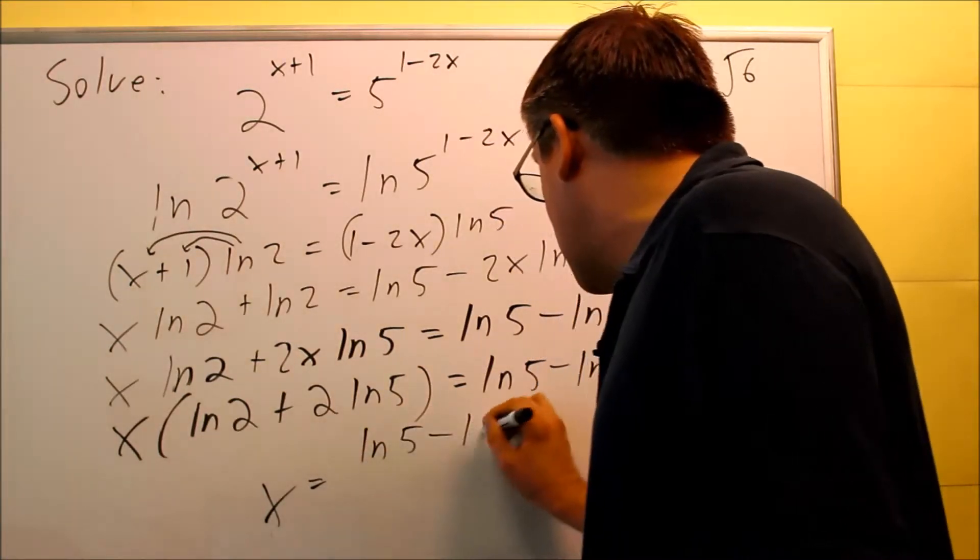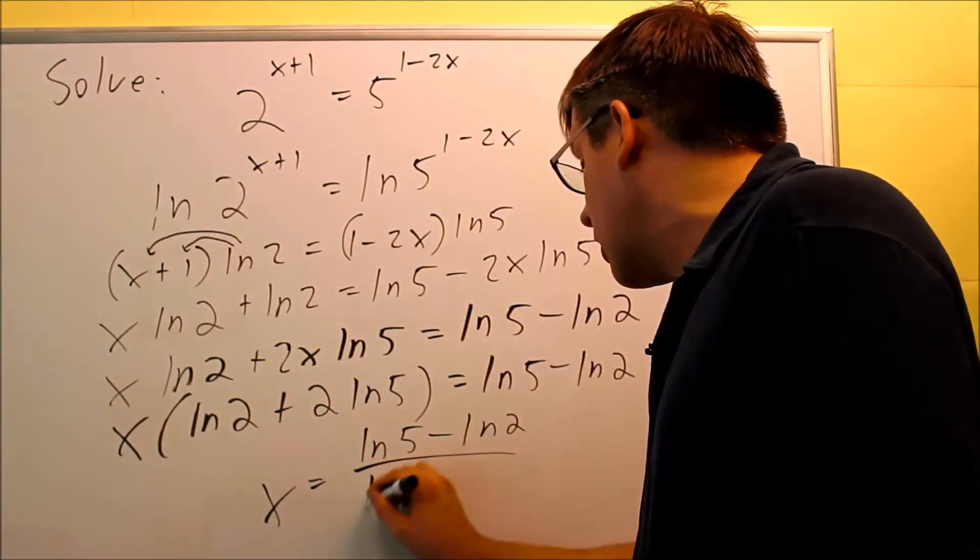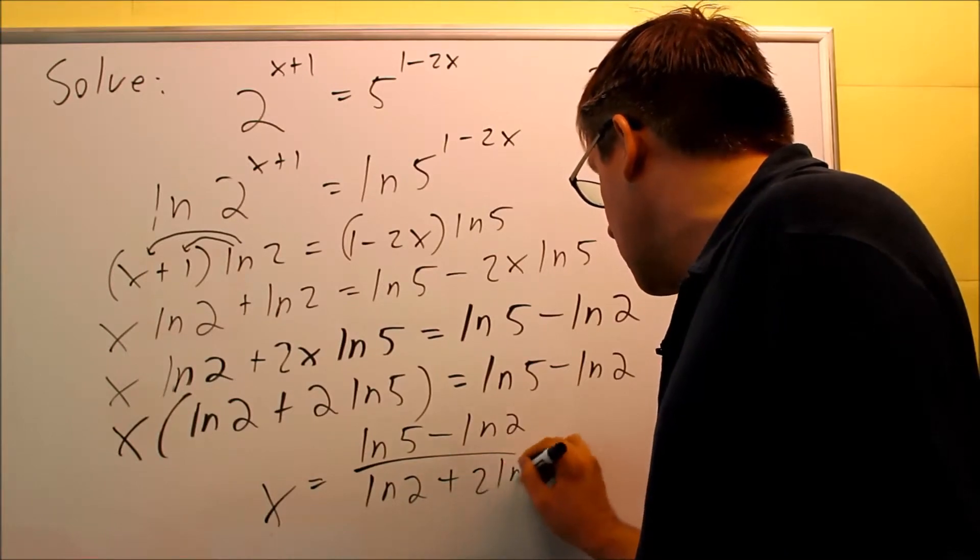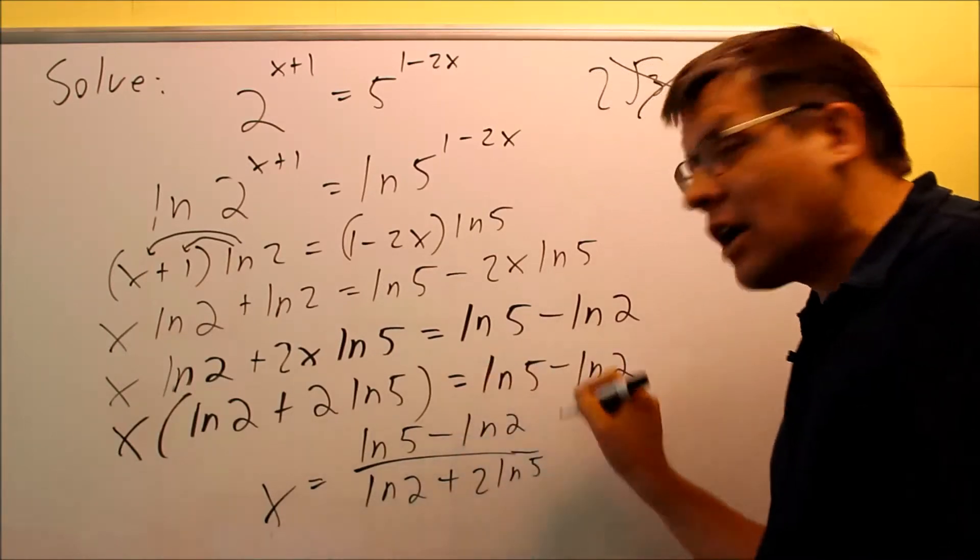And I get x equals (ln 5 - ln 2) / (ln 2 + 2 ln 5). This would be the exact answer. If you wanted to put this into a calculator, you can certainly do so.